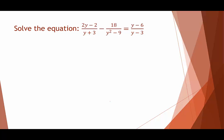In the last example, we have something to factor: a difference of squares, giving (y plus 3)(y minus 3). Setting each factor's denominator to 0: y plus 3 cannot equal 0, so y cannot equal negative 3; and y minus 3 cannot equal 0, so y cannot equal positive 3. The domain does not contain negative 3 or 3.